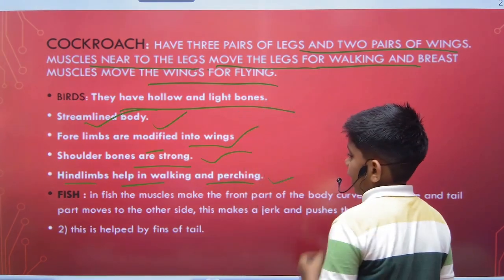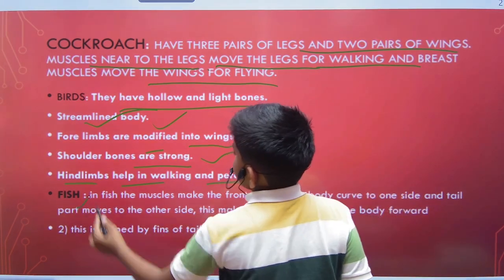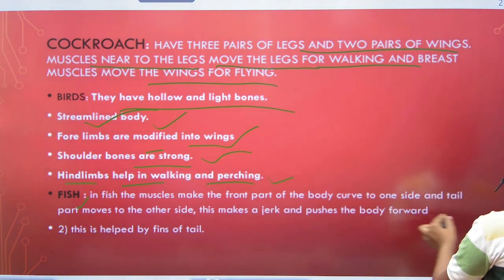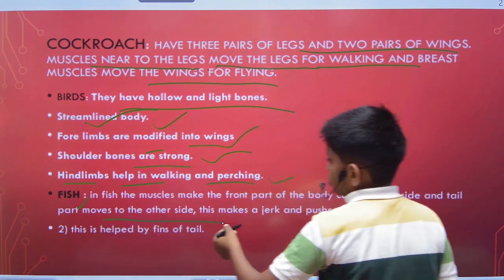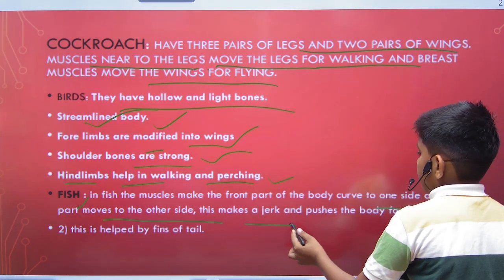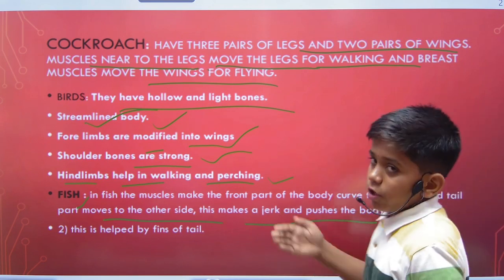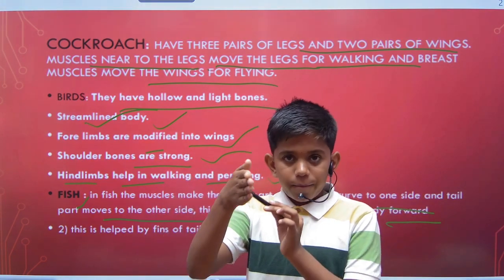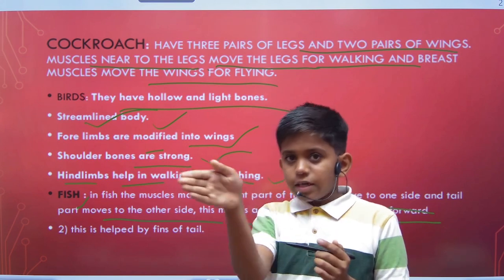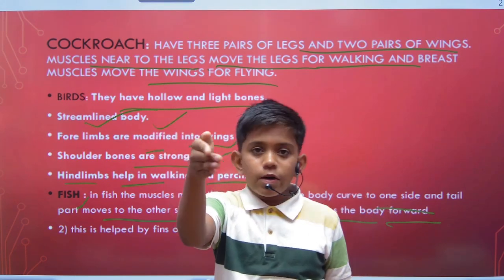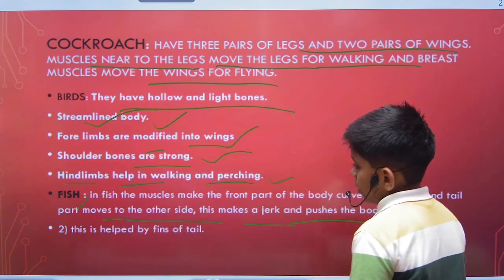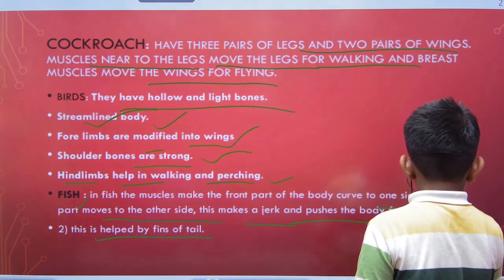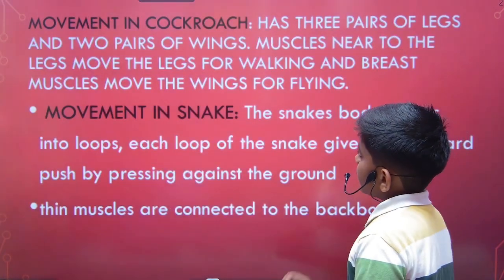In fish, the muscles make the front part of the body curve to one side and the tail moves to the other side, creating a jerk that pushes the body forward. The fish moves by alternating this front-back curve, and this movement is aided by the fins of the tail.